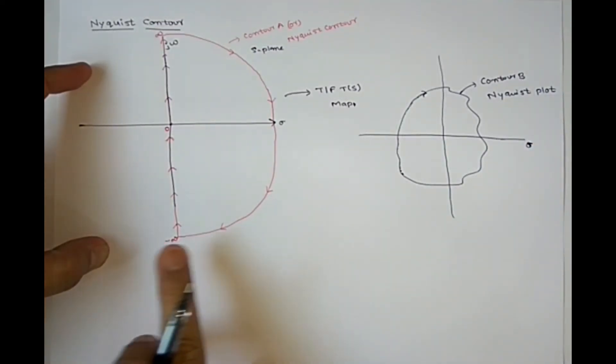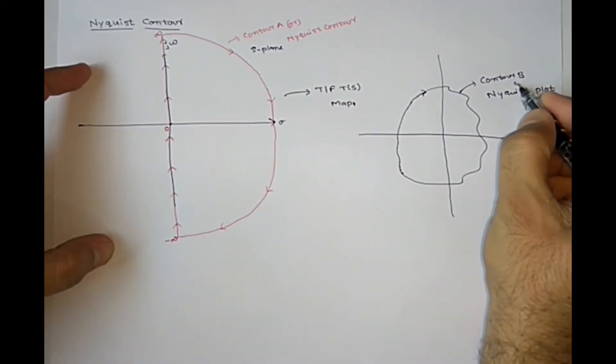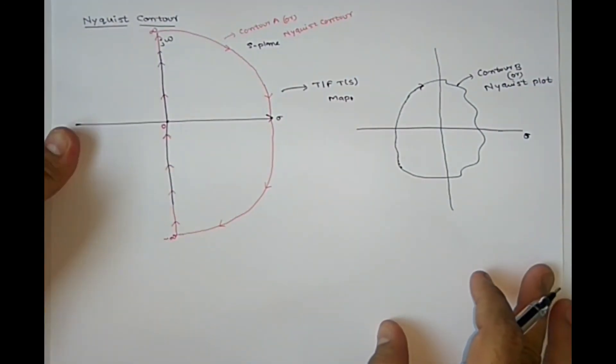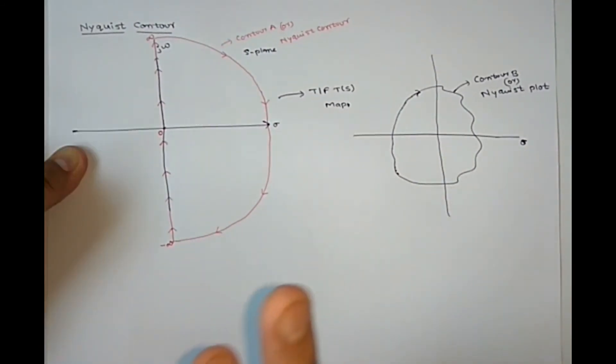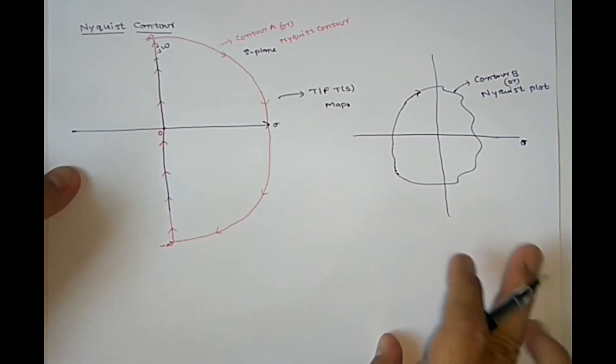For this specific contour B, if you draw contour B, this contour B also called Nyquist plot. You should not take any different contours, you should take only this contour only, you need to map, you will get Nyquist plot.